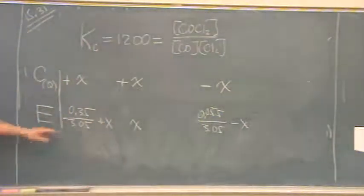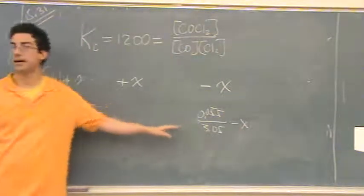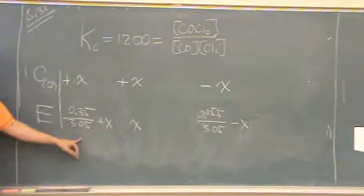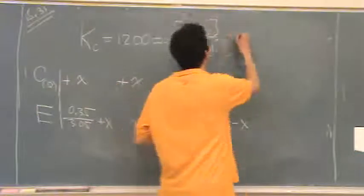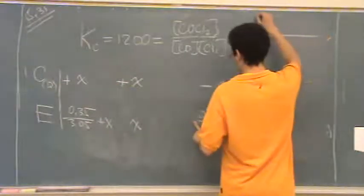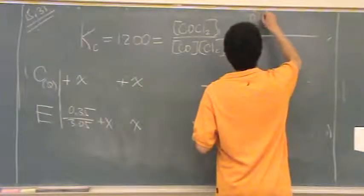There's K, and I actually know all those values. They're right here. I just read them right off the table. So, concentration of COCl2 is right here, this value. It's 0.05.